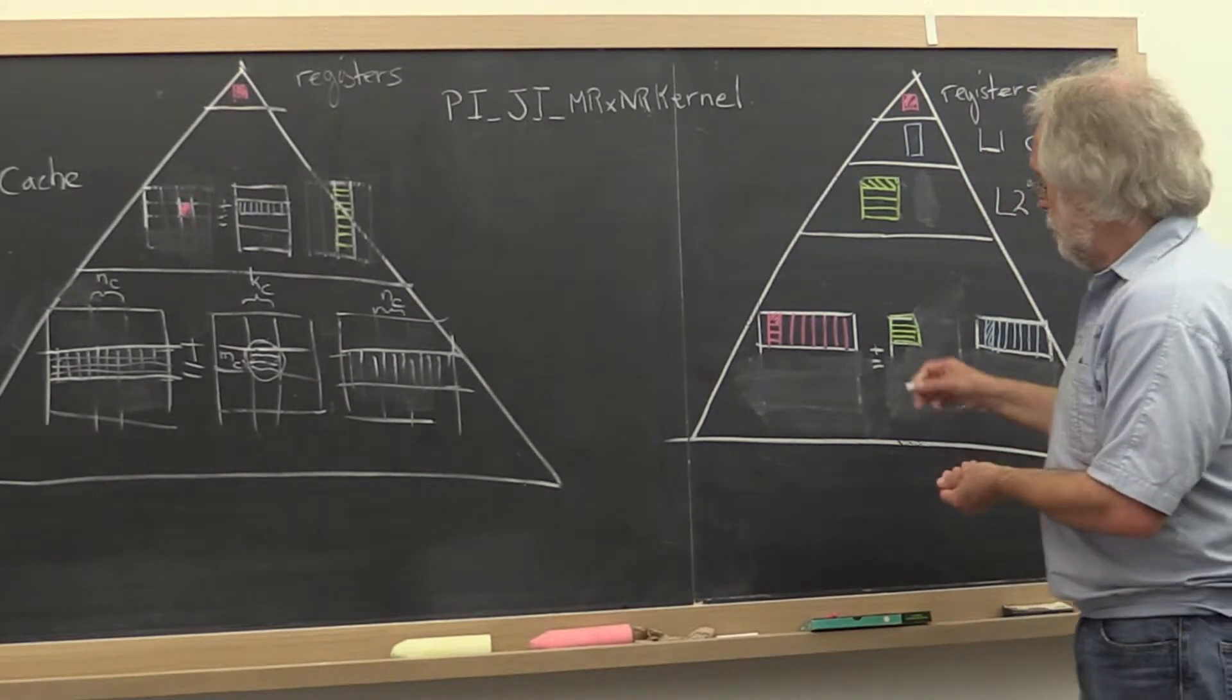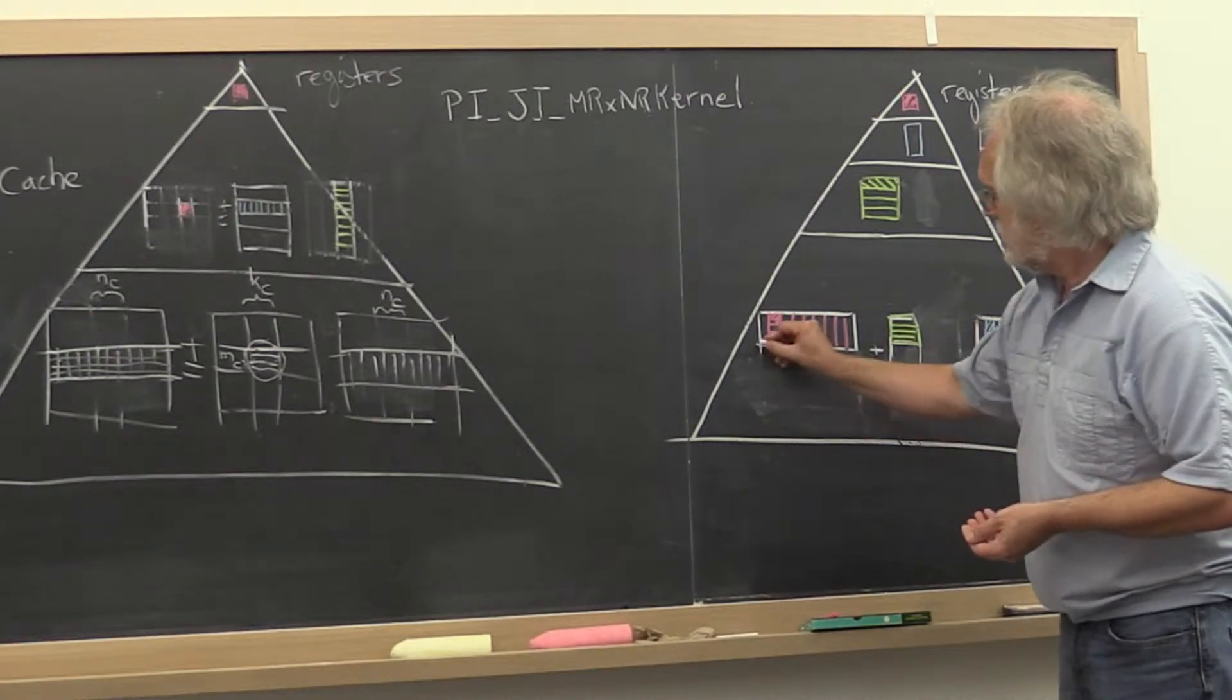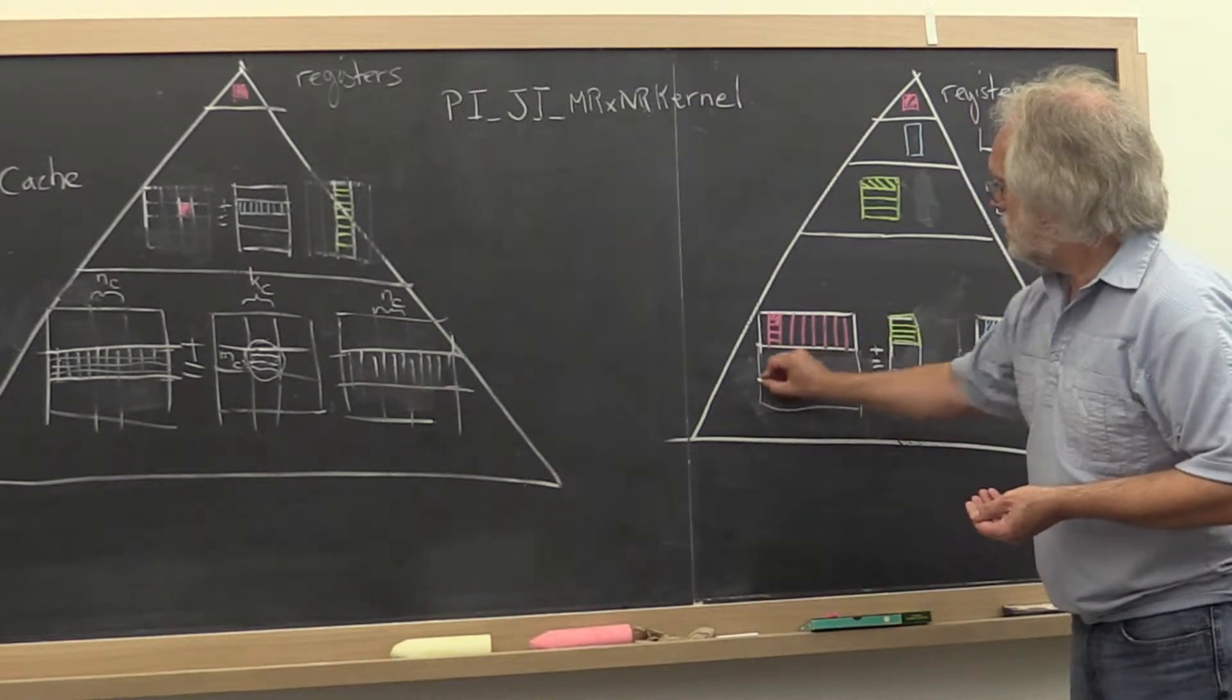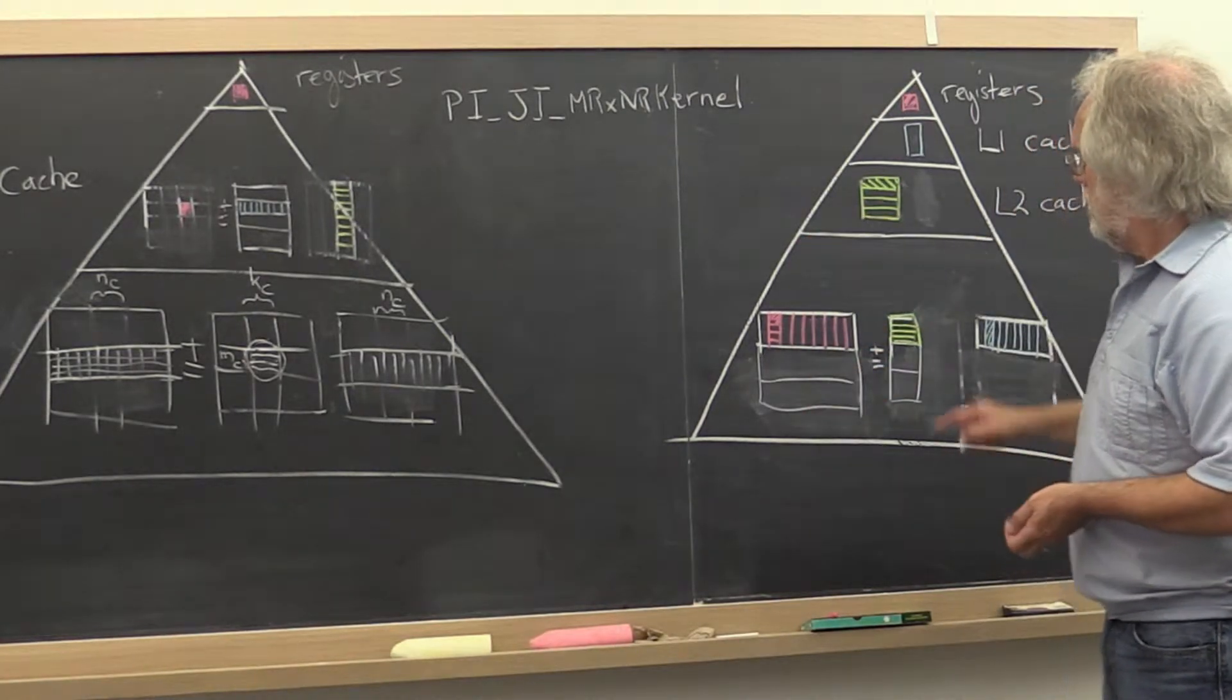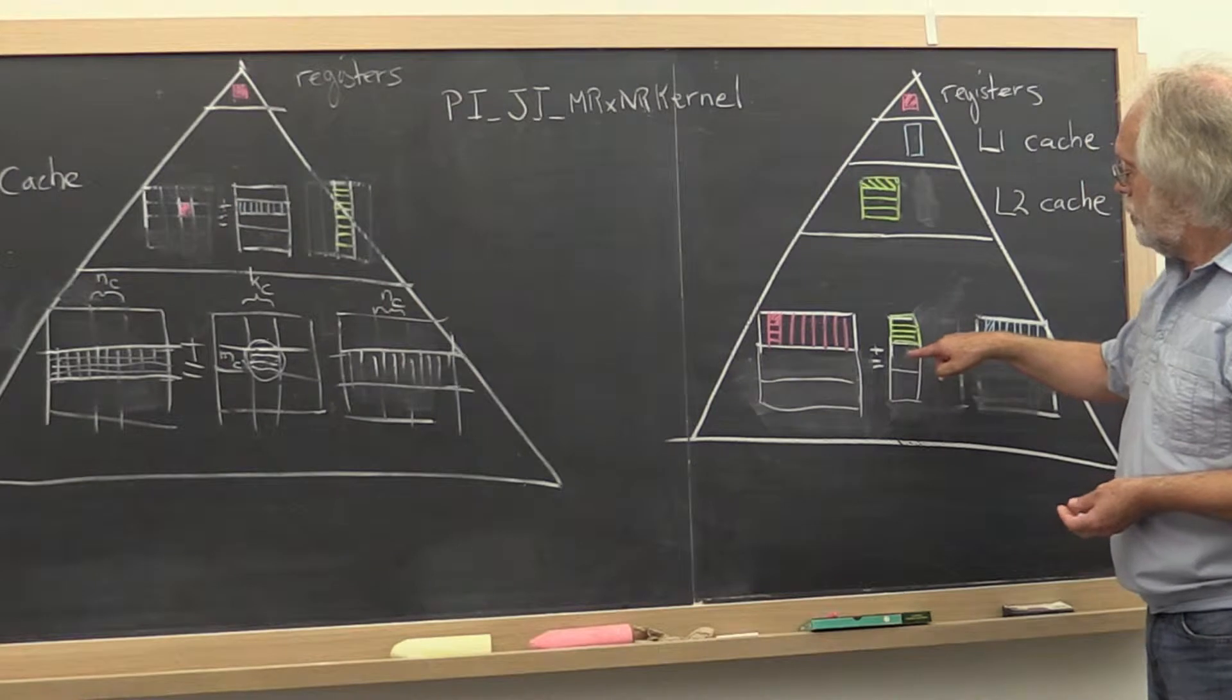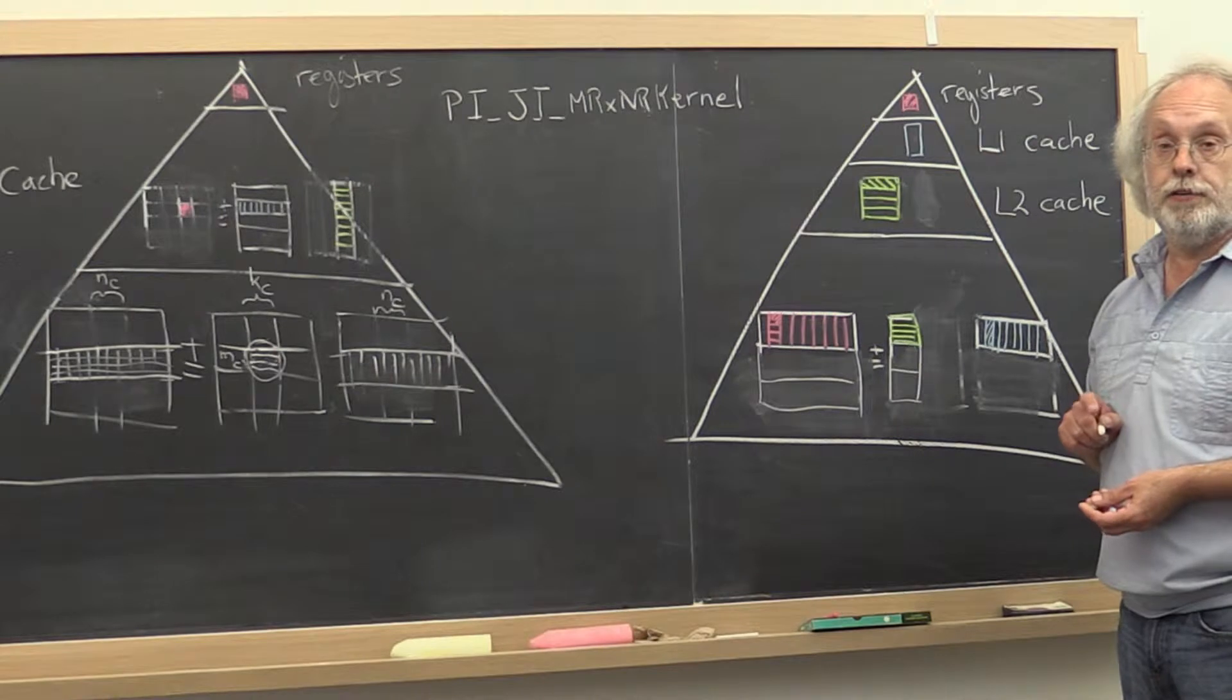If we go back to where we were here before we erased things, what we had was a loop over row panels of C being updated by computing a block of A or blocks of A times the row panel of B.